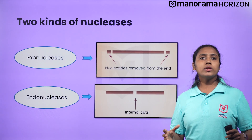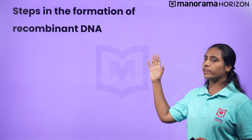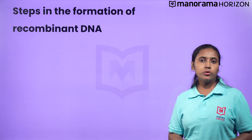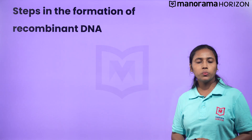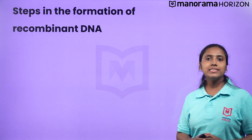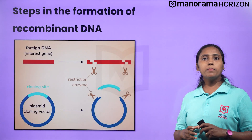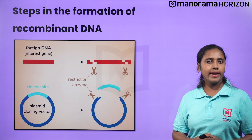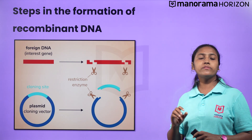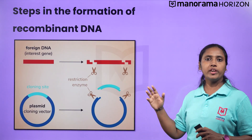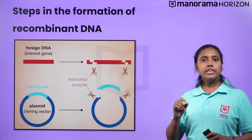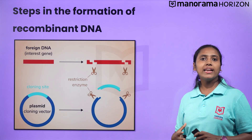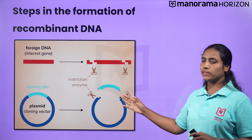What are the steps involved in the formation of recombinant DNA? Once each restriction endonuclease finds its specific recognition sequences by inspecting the length of the DNA sequence, it binds to the DNA and cuts each of the two double helix strands at a specific point in their sugar phosphate backbones. Each of these restriction endonucleases recognizes specific palindromic nucleotide sequences in the DNA.